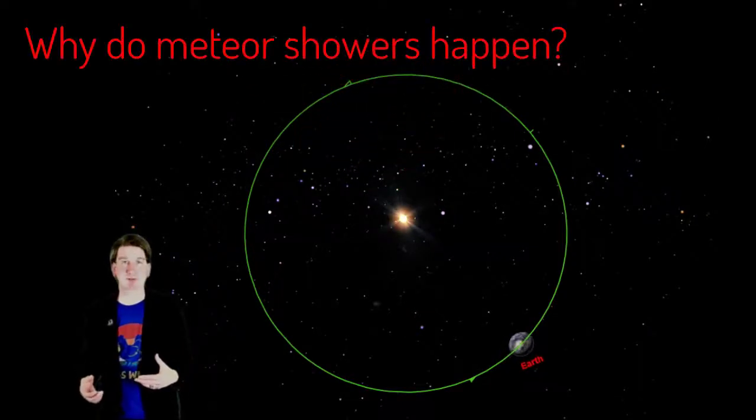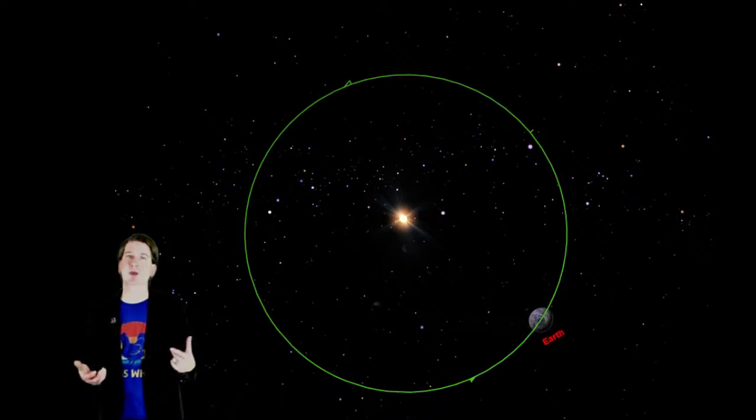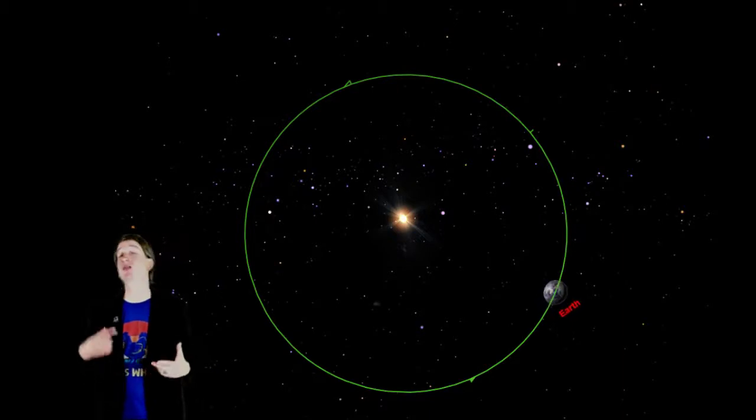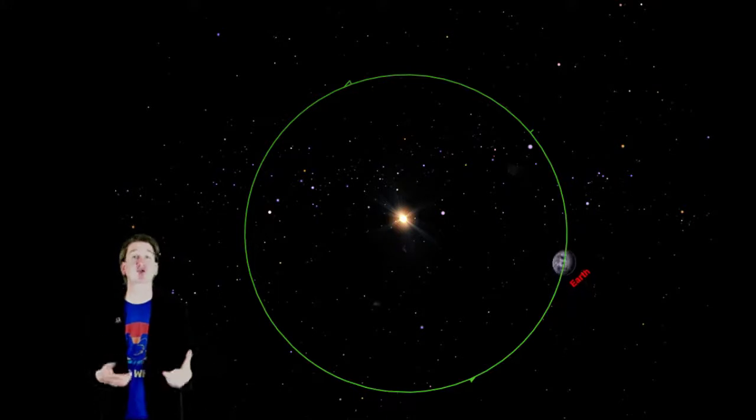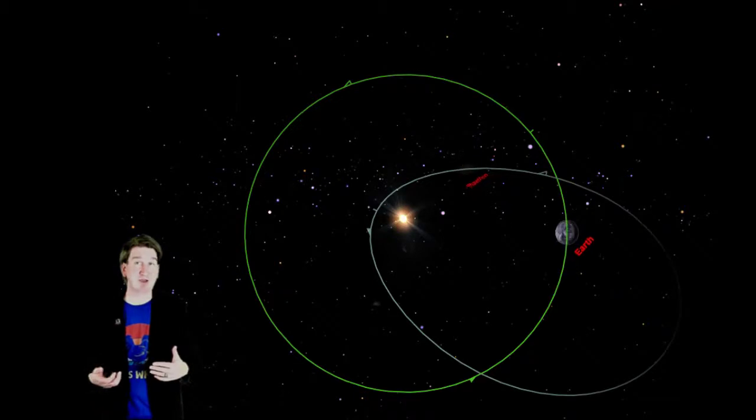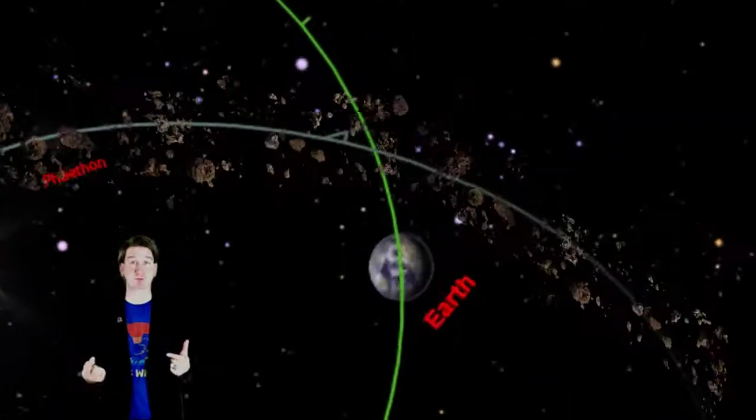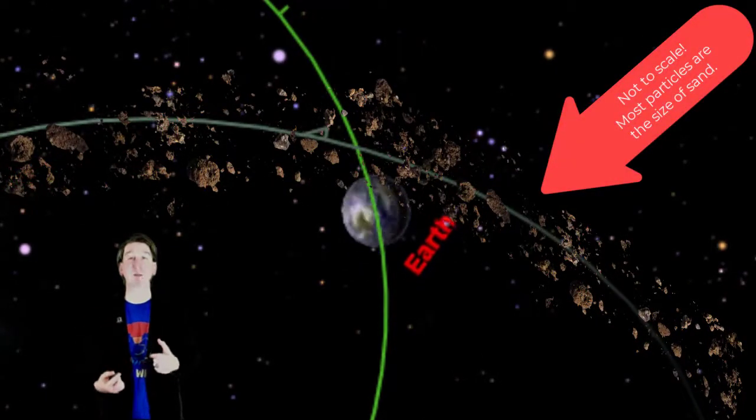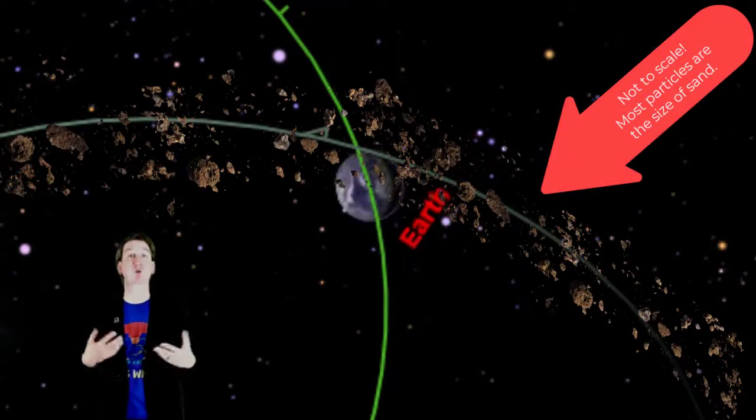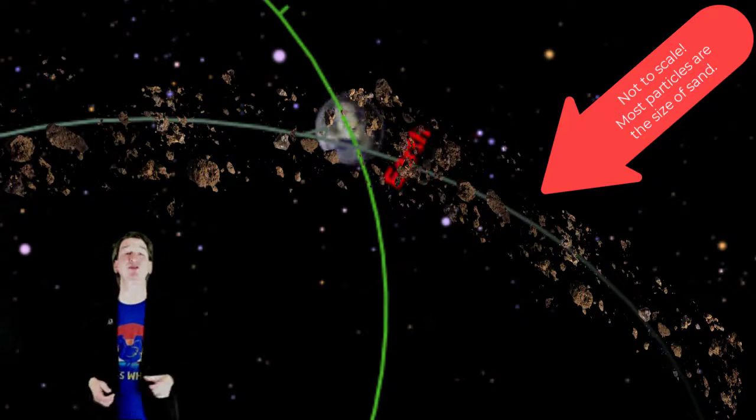Why do meteor showers happen? We know the Earth revolves, or goes around the Sun. But there are objects like other planets, comets, and asteroids that also go around the Sun. When comets, and sometimes asteroids, go around the Sun, they leave trails of dust, rock, and ice that have broken off of them all around their orbits. When the Earth goes through the orbit of one of these objects, we run into all of the cosmic debris. And voila, a meteor shower!